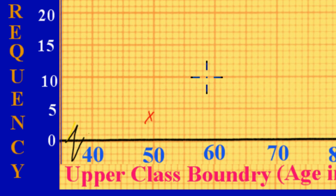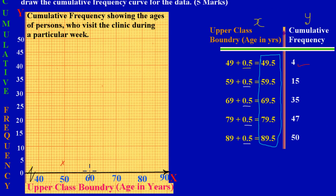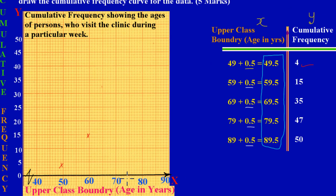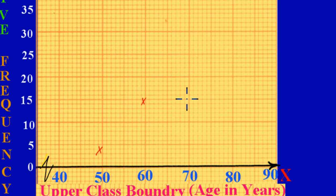Next, fifty-nine point five falls between sixty and fifty-nine on the x-axis, and I'm going up to fifteen on the y-axis. Exactly on that line. Then sixty-nine point five falls exactly between sixty-nine and seventy, and I'm going up to thirty-five - that horizontal line at thirty-five on the y-axis corresponds to that point.